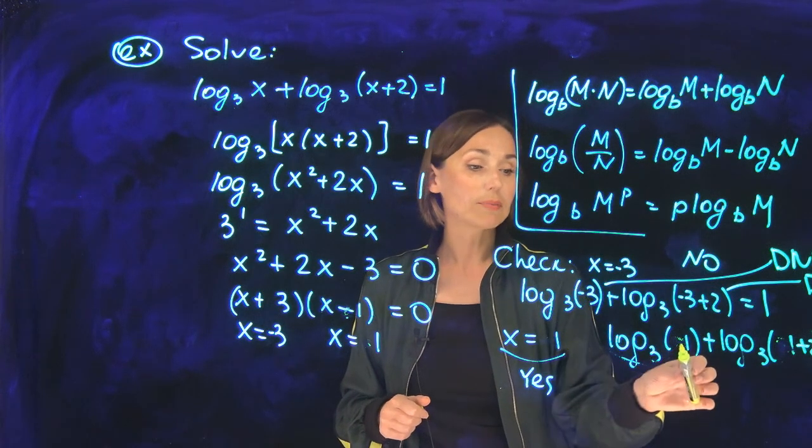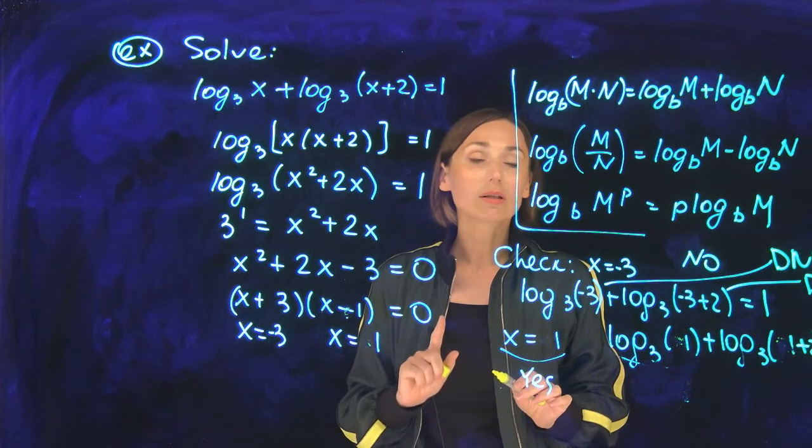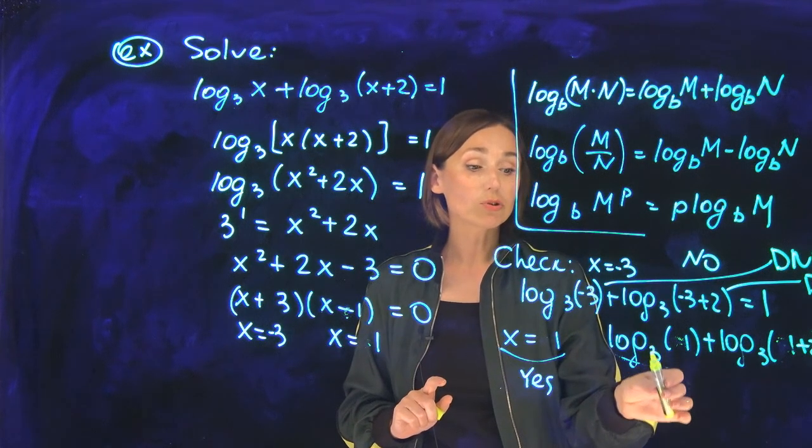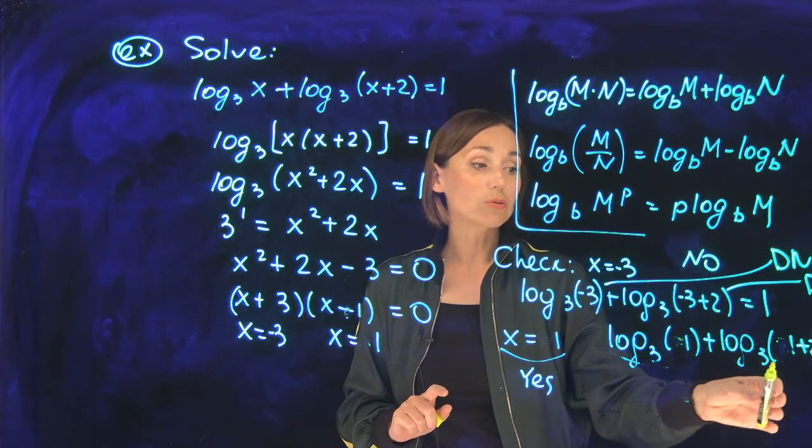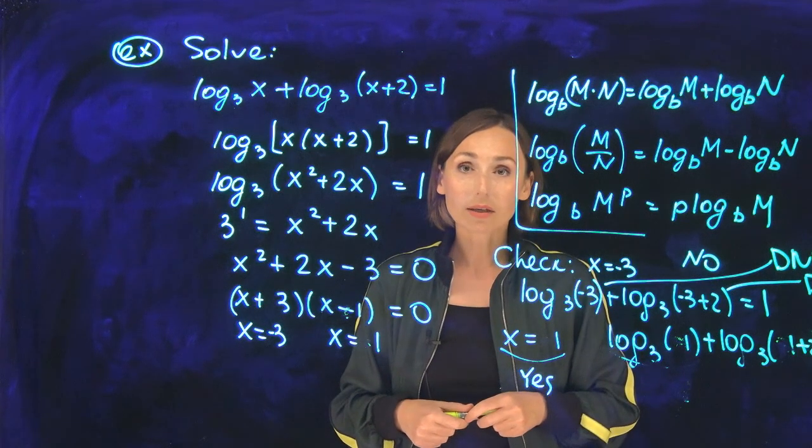Let's check x = 1. I plug 1 into the original equation. We have log base 3 of (1) plus log base 3 of (1 + 2) equals 1. Everything is valid here.